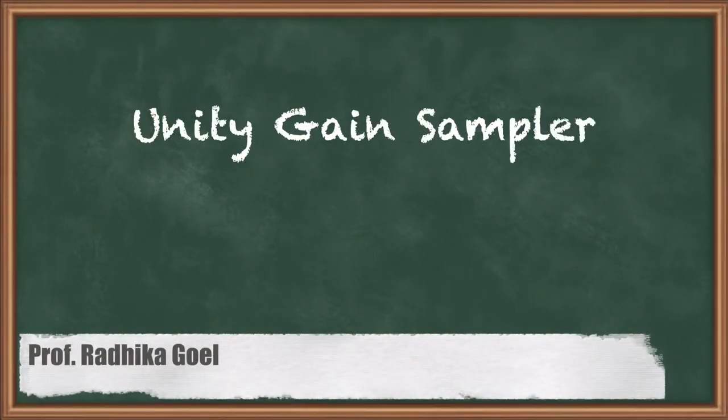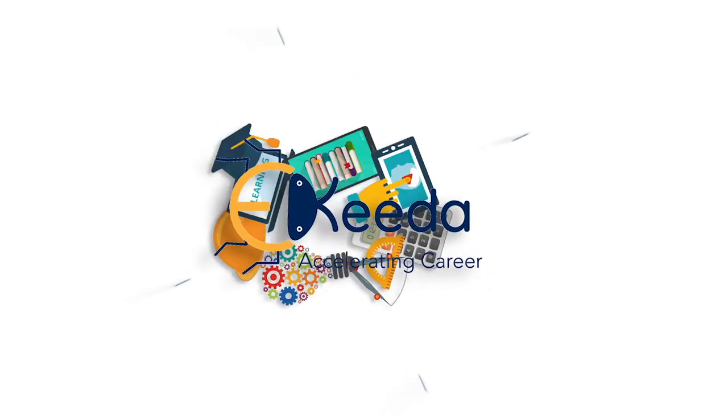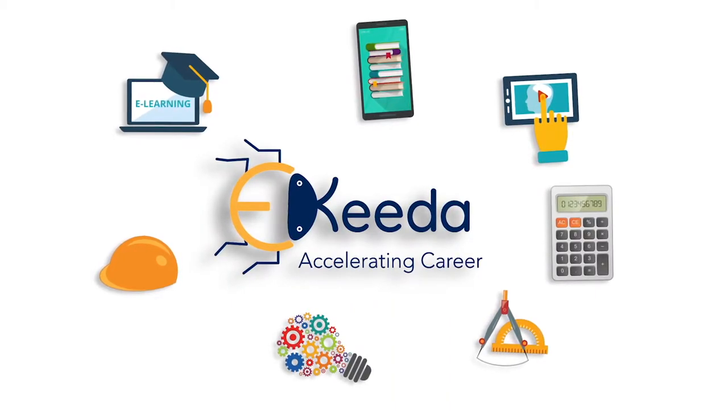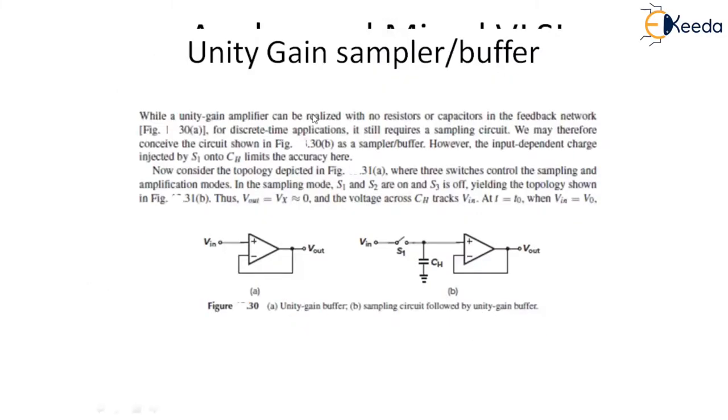Hello everyone, in this lecture we will discuss about unity gain sampler or buffer. While a unity gain amplifier can be realized with no resistor and capacitor as shown in figure 38 in the feedback network,